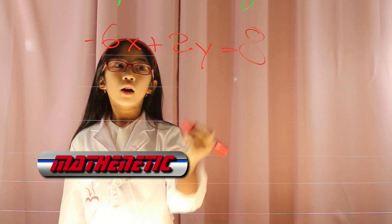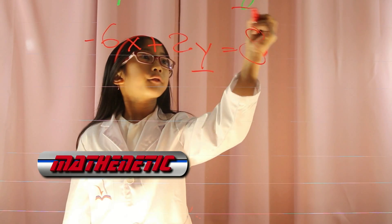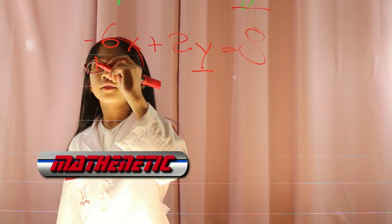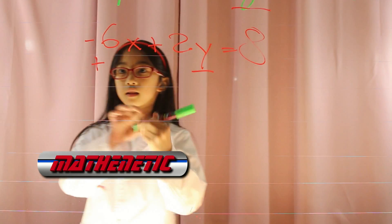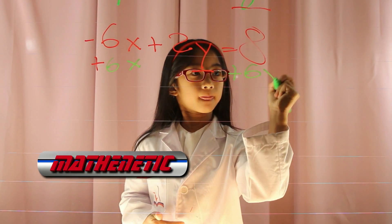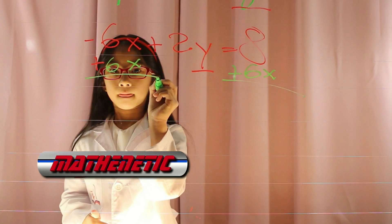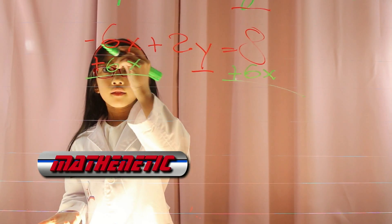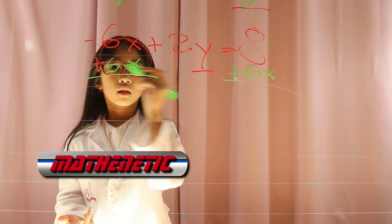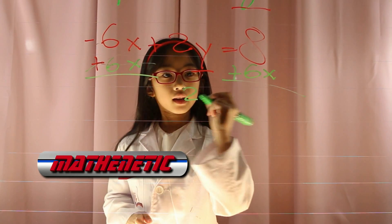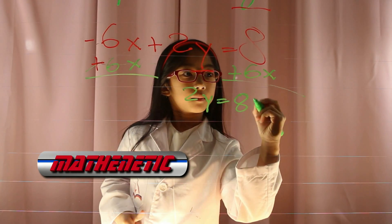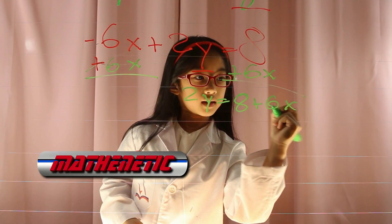What is the first thing I need to do? I need to solve for y. I need to add the opposite of negative 6x on both sides. This negative 6x and the positive 6x cancel. Now bring the 2y equals 8 plus 6x down.